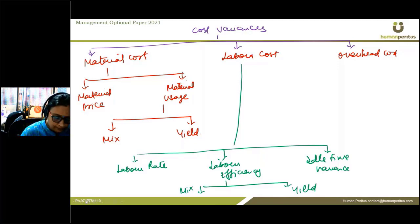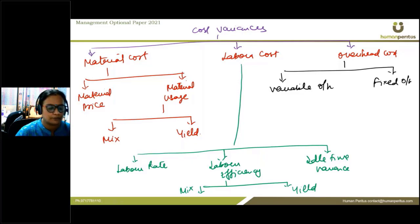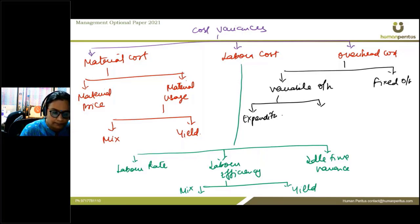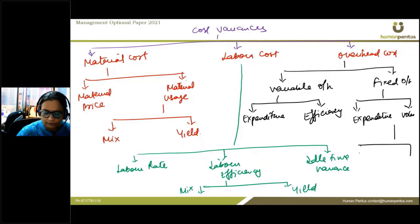For overhead variances, these can be divided into variable overhead variances and fixed overhead variances. Variable overhead variances can be divided into expenditure variance and efficiency variance. Fixed overhead variances can be bifurcated into expenditure variance and volume variance. Under volume variance, it can further arise due to efficiency, capacity, or calendar variance.